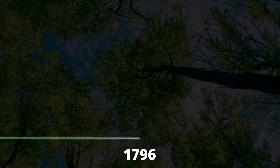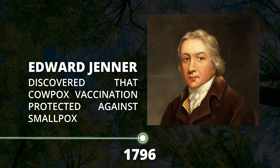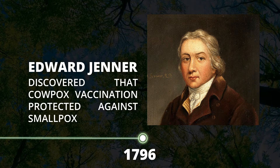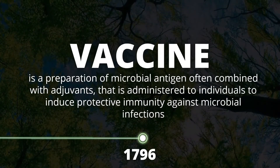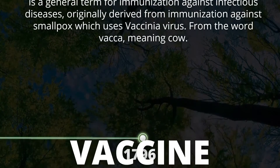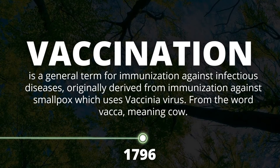Variolation was eventually replaced by vaccination when Edward Jenner discovered that cowpox vaccination protected against smallpox in 1796. He started his experiments after observing that milkmaids who had gotten cowpox did not show any symptoms of smallpox after variolation. He collected cowpox lesions containing vaccinia virus and injected it to humans, where cross-reaction as well as immunity was observed. A vaccine is a preparation of microbial antigen often combined with adjuvants, administered to induce protective immunity against microbial infections. Vaccination is a general term for immunization against infectious diseases, originally derived from immunization against smallpox using vaccinia virus — it came from the word 'vaca,' meaning cow.